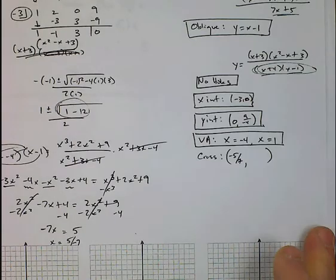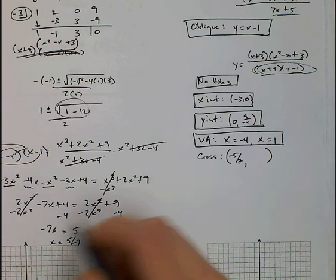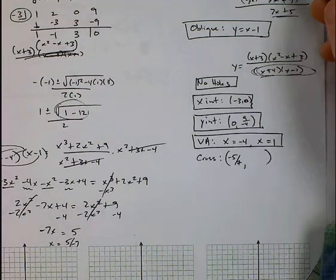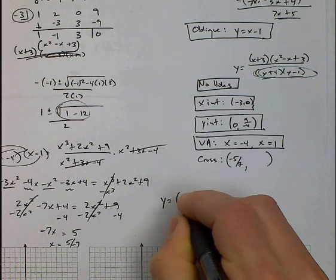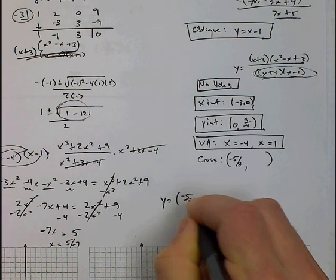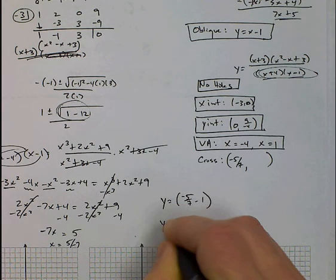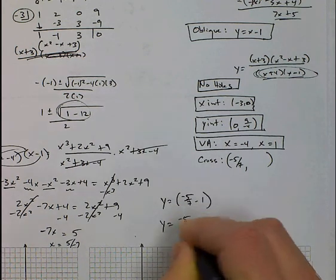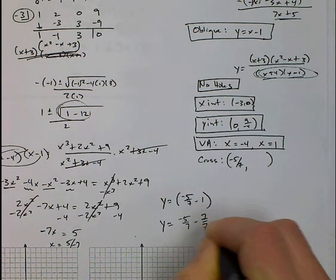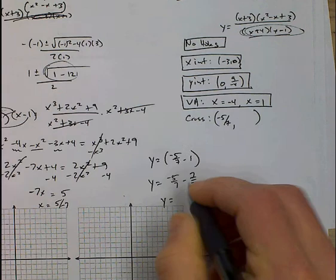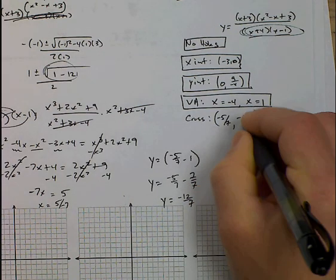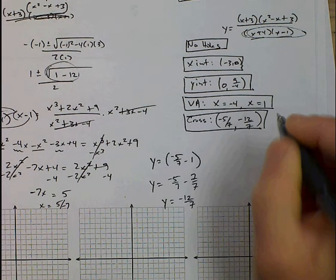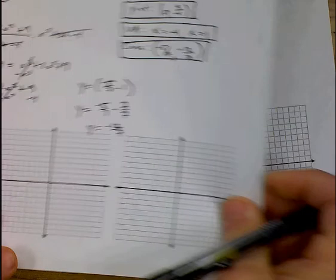So to find the y value for where it crosses, we can plug it into either one. We plug it into the original or to this one. This one's going to be a lot easier. So the y value is going to be negative 5 over 7 minus 1. So get a common denominator. And sign for negative 12 over 7. And that is where it's crossing. And so all I need to do now is graph everything that I have.